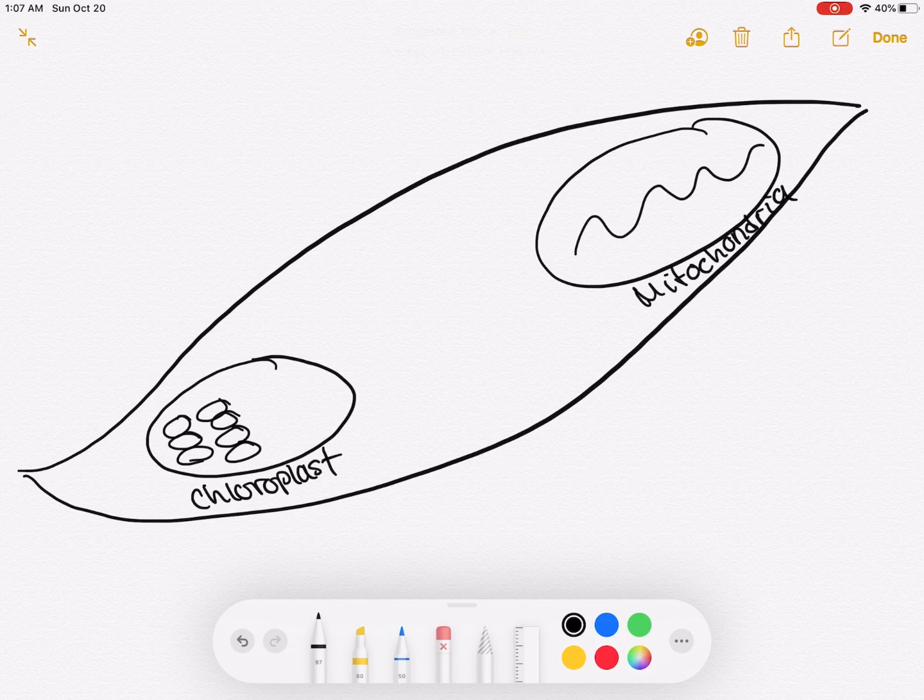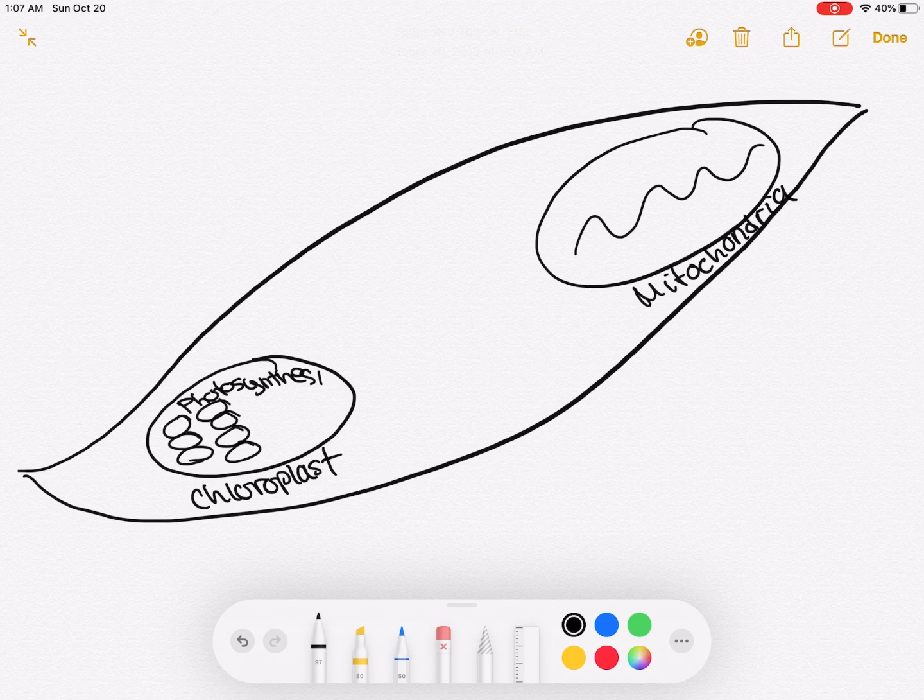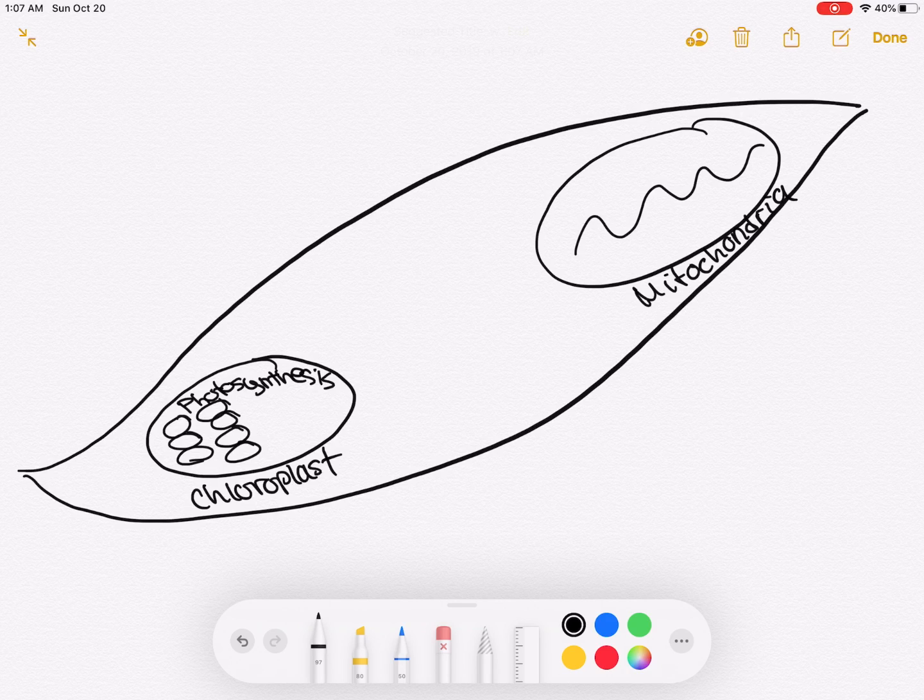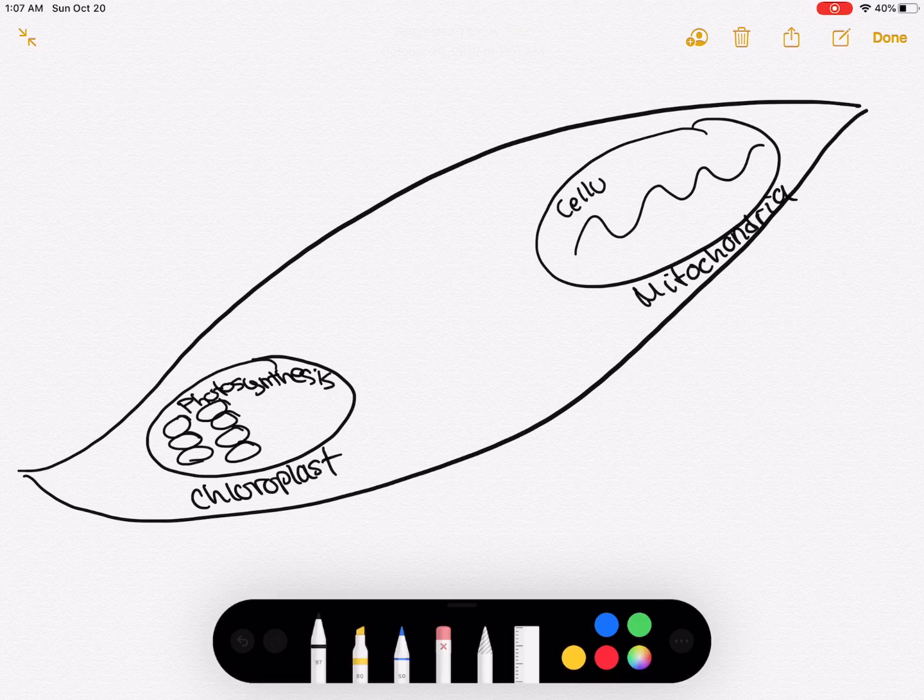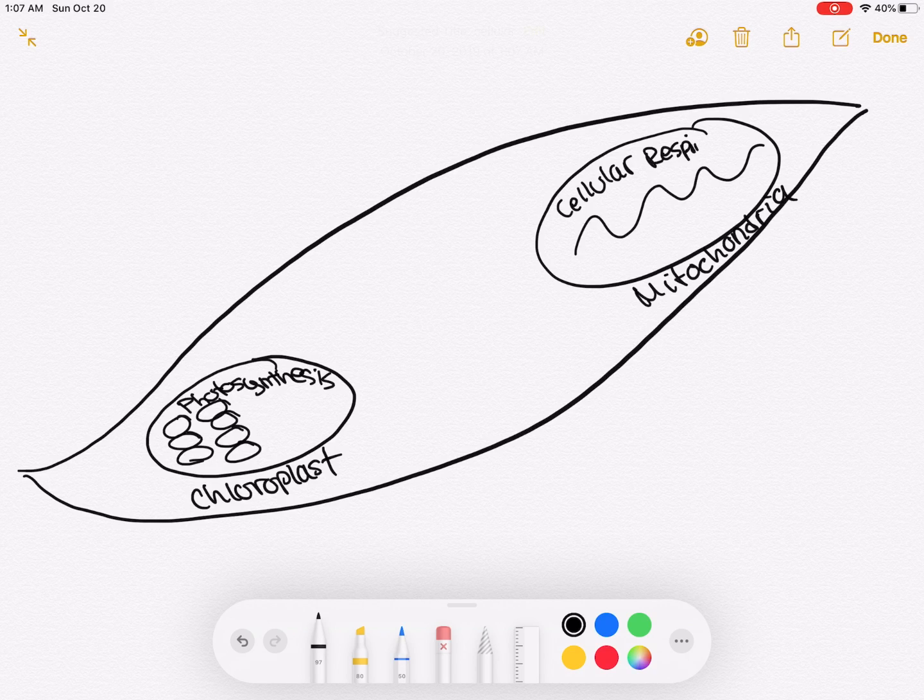And then inside the chloroplast I'm writing photosynthesis because that is where photosynthesis occurs. And then inside the mitochondria I'm writing cellular respiration because cellular respiration occurs in the mitochondria.